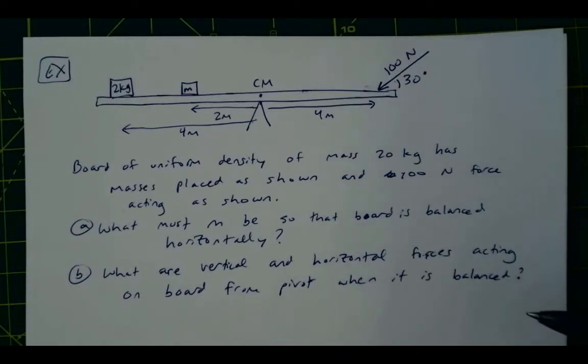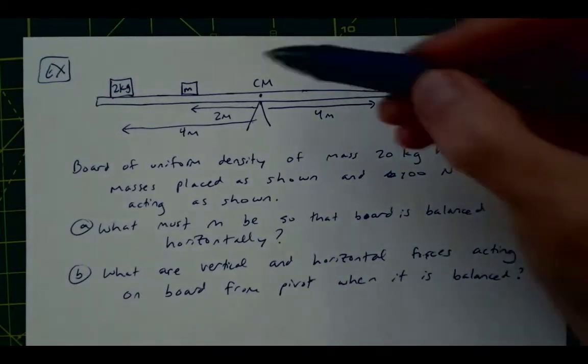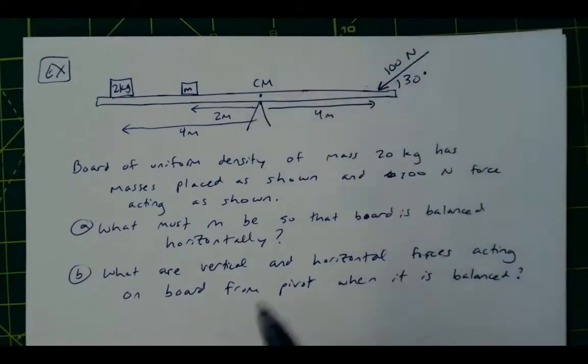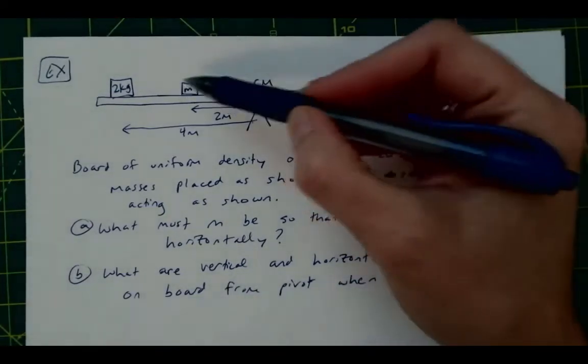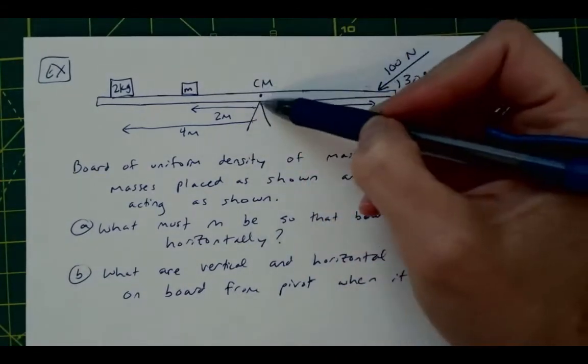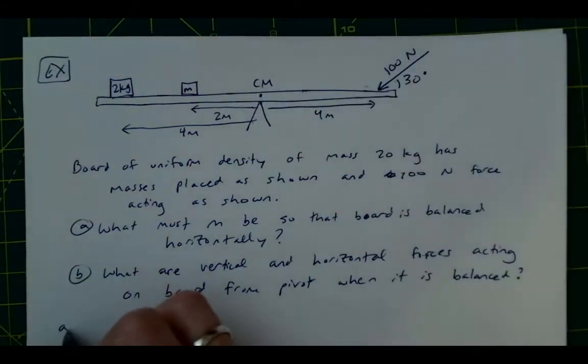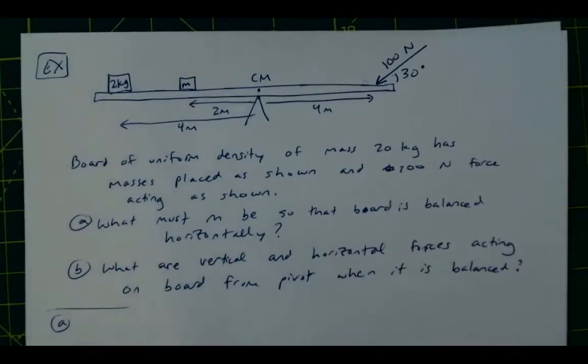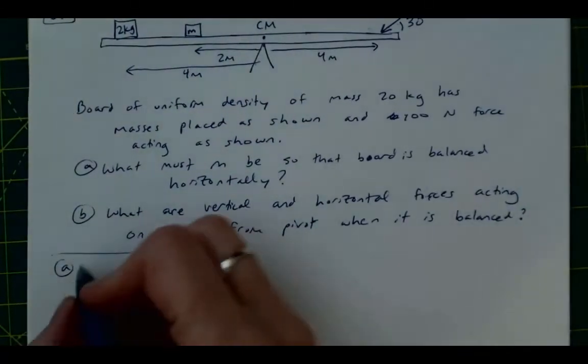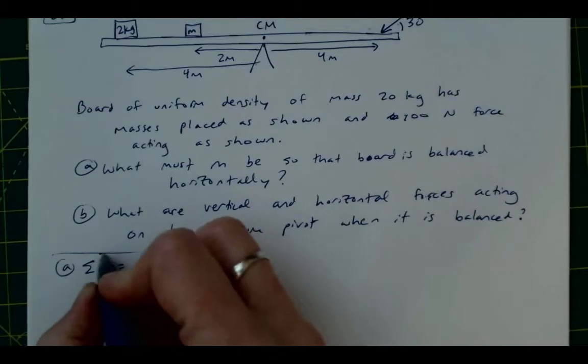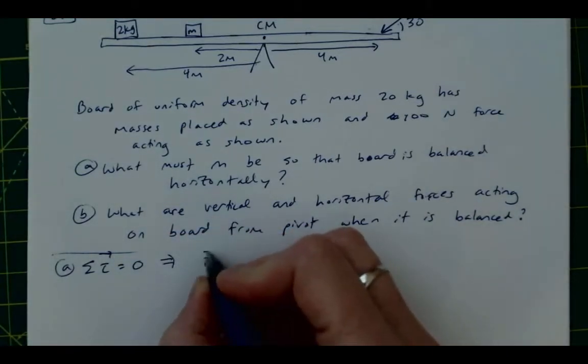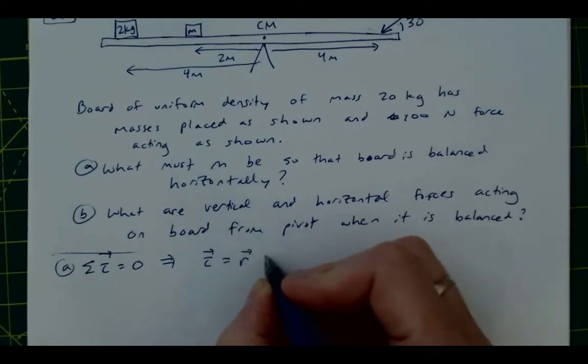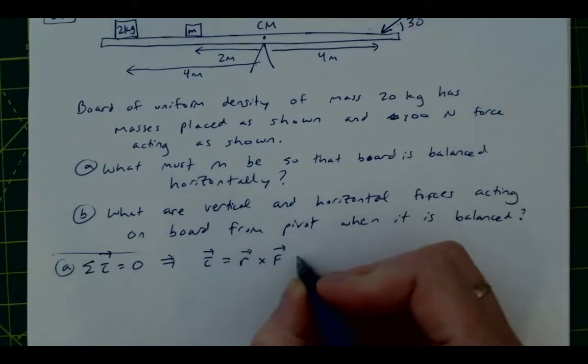We can't use the sum of forces because we don't actually know yet what the vertical and horizontal forces are acting on the board, and we need to know the mass M in order to get those. Alright, so for part A, then we can use the sum of torques. So we can say that the sum of torques, again,